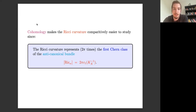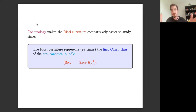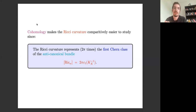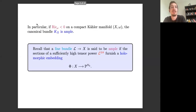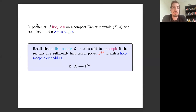So if we want to say something about the Ricci curvature we can equivalently say something about the first Chern class of the anticanonical bundle. This is the Kähler-Einstein story — the Calabi conjecture and so on — the fact that these are more or less equivalent in certain cases. In particular, if we have a Kähler metric of negative Ricci curvature on a compact Kähler manifold then the canonical bundle will be ample.